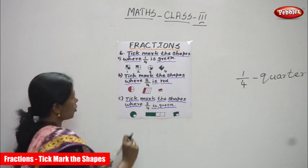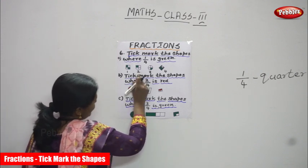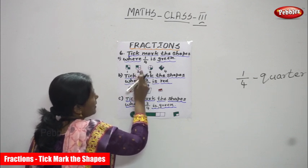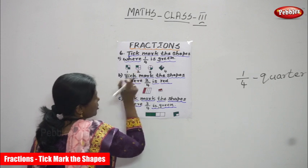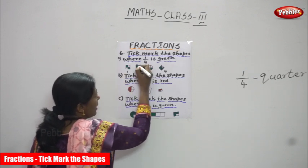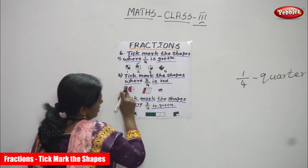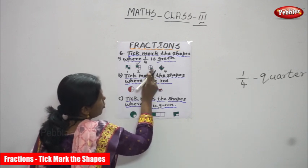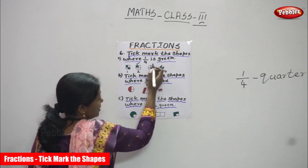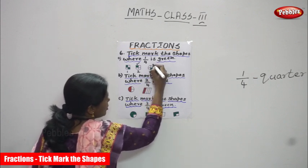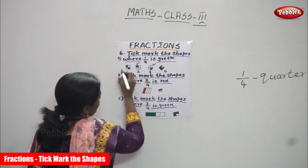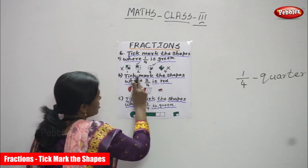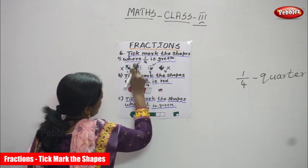Look at the second diagram — I cut it into four equal parts and shaded only one part, so this is one by four and I put a tick mark. The third diagram is also one by four because only one part is shaded in green. The first diagram is wrong and the fourth diagram also gets a wrong mark.